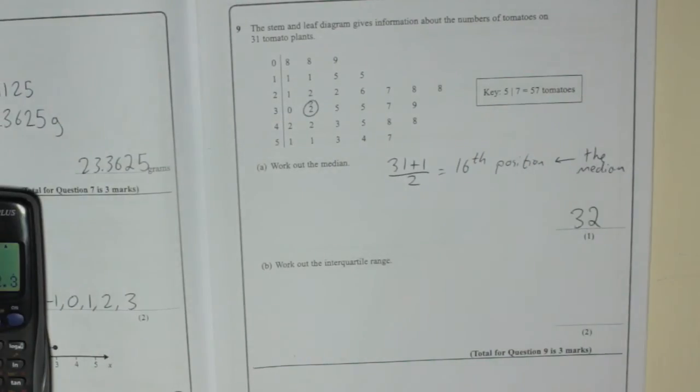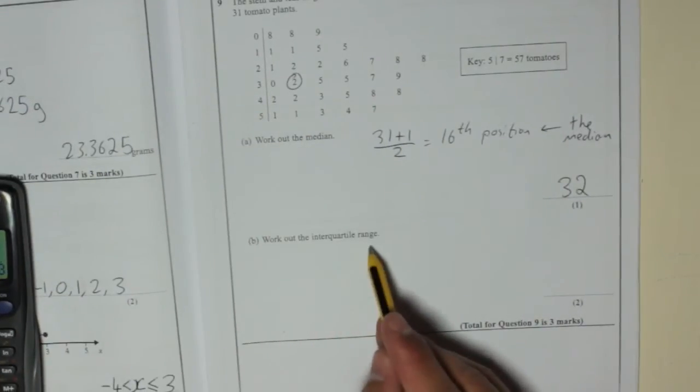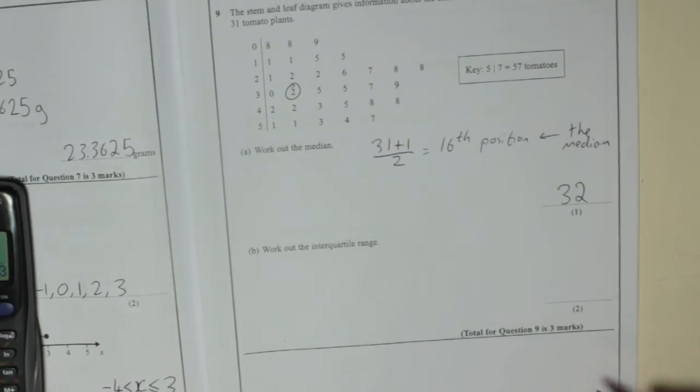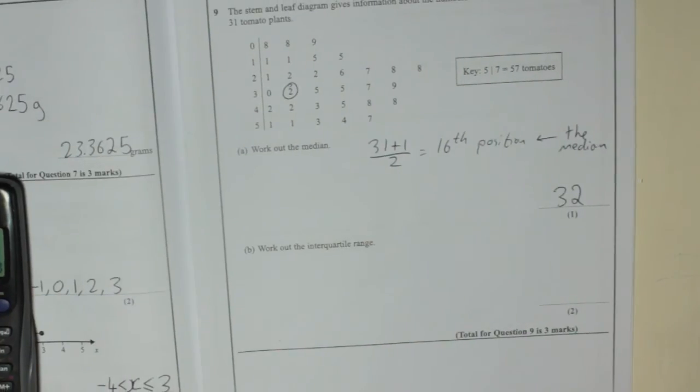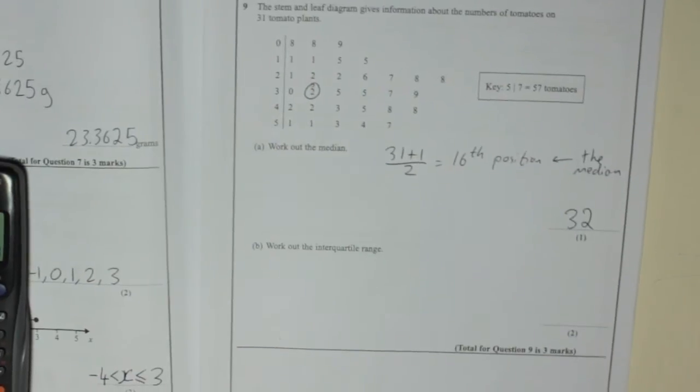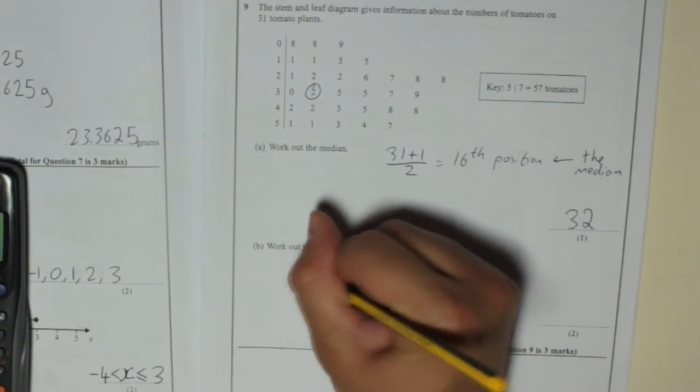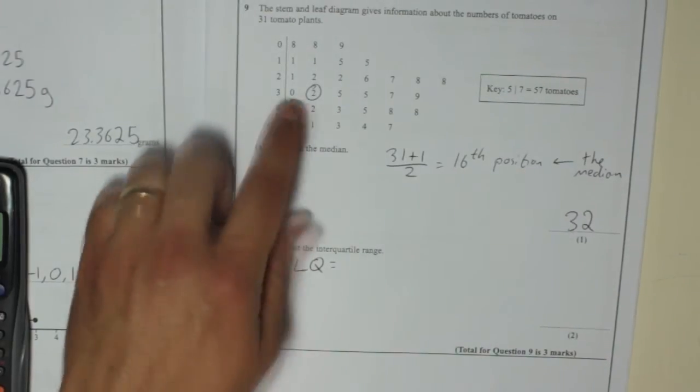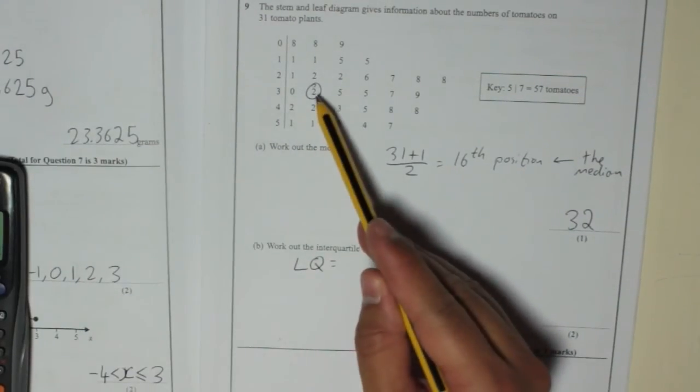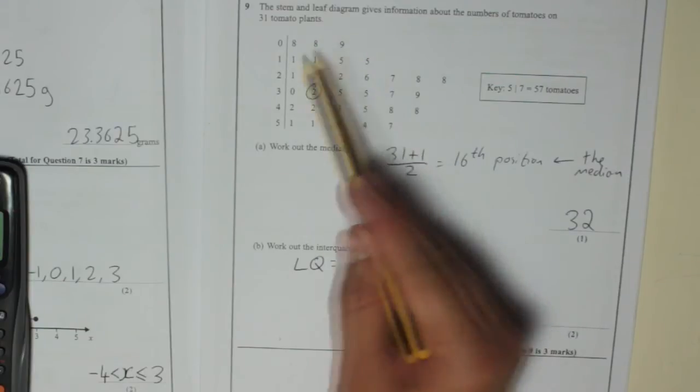Work out the interquartile range. Now the interquartile range is the difference between the lower quartile and the upper quartile. So we'll work out those things. Lower quartile first. Now the way you find the lower quartile is you take the lower half, the lower half of the data.